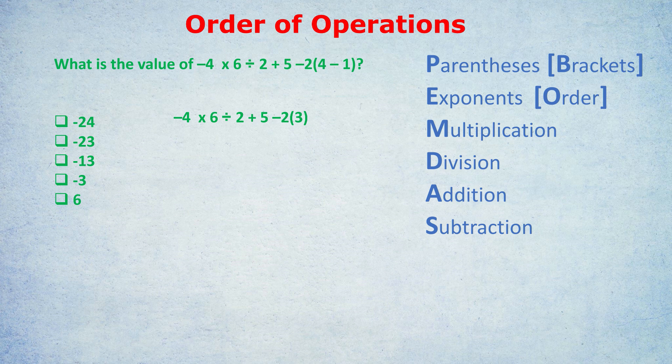There are no exponents, so we move on to multiplication. You might wonder: do I do 6 divided by 2 first, or negative 4 times 6? As mentioned, multiplication and division are interchangeable — you get the same result either way. For example, doing multiplication first: negative 4 times 6 is negative 24, then divide by 2 to get negative 12. Or doing division first: 6÷2 = 3, then 3 times negative 4 is also negative 12. Following PEMDAS and doing multiplication first, we also get negative 2 times 3 = negative 6.